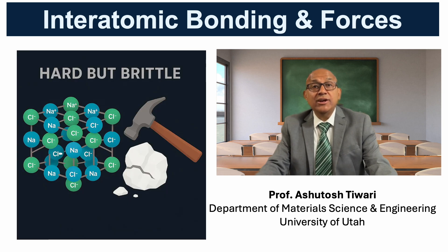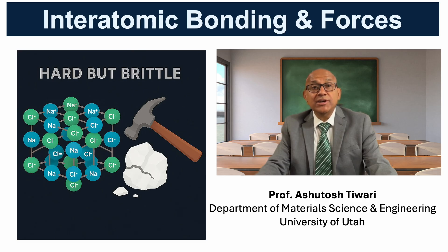Ionic solids tend to be hard but brittle. If we try to deform the lattice, layers of like charges are forced to align, leading to strong repulsion and fracture, rather than plastic deformation.